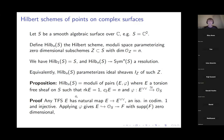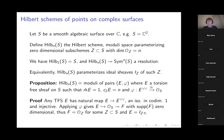Since the support of F is zero-dimensional, we can identify it with the structure sheaf of some zero-dimensional subscheme. It's an elementary exercise to check that the dimension of the structure sheaf matches the second Chern class of E. Thus E, as the kernel of the map from O_S to F, is identified with the ideal sheaf of that subscheme, completing the proof.